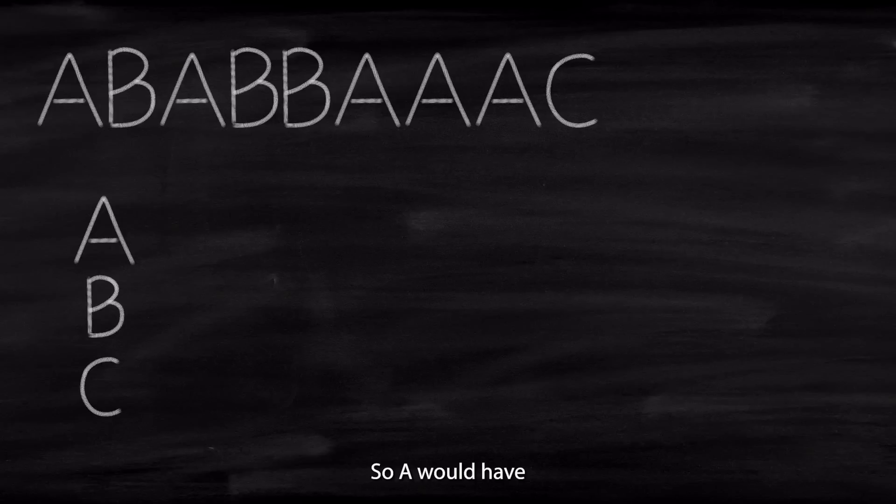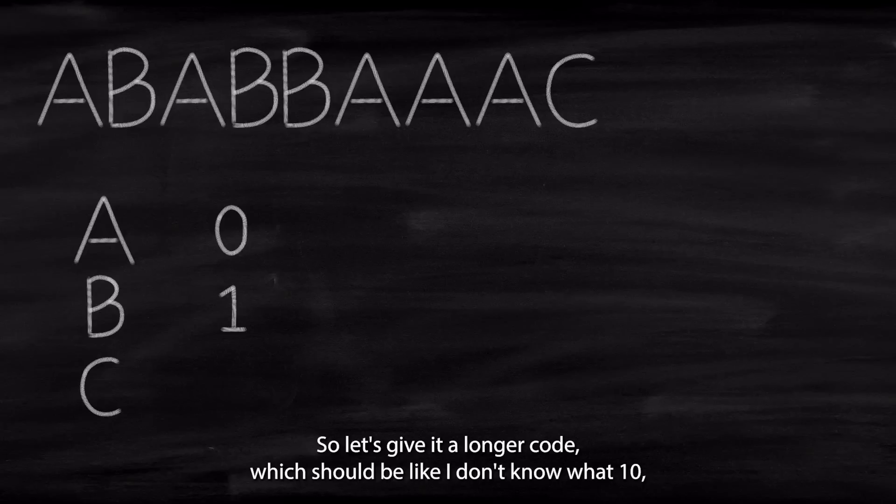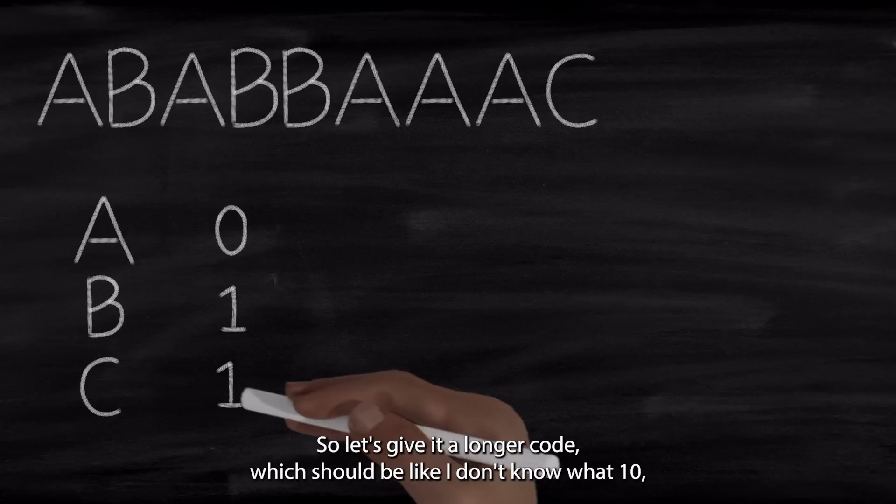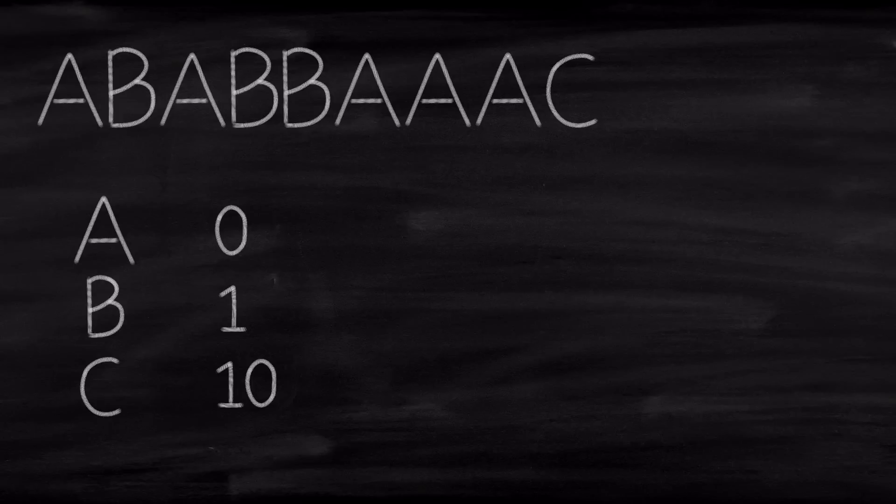A is occurring a lot and it doesn't make sense to give it two bits. What if we just give it just one? We still need to apply this principle of giving short codes to frequently occurring items. So A would have the value 0 and B maybe 1 and C, it's less occurring, so let's give it a longer code, which would be like 1, 0. But the problem is a code like 1, 0 might be mistaken for B, A.